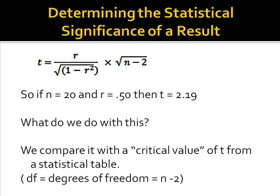What do we do with this number? What does it mean? In order to determine if this value of t is statistically significant, we compare it to the critical value of t from a statistical table. In order to do this, we need to know the degrees of freedom. In this case, the degrees of freedom, df, equals n minus 2 or 18.